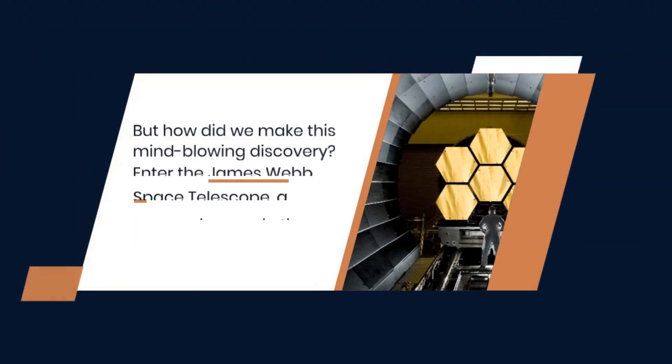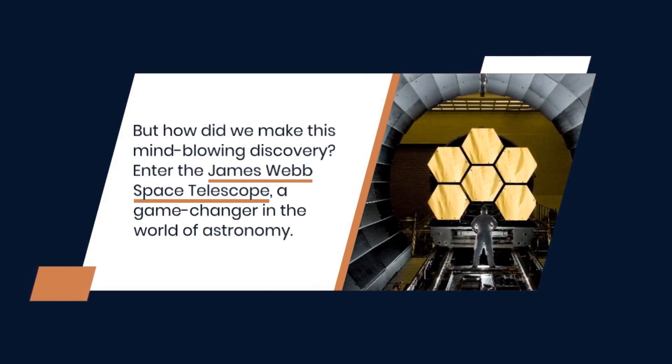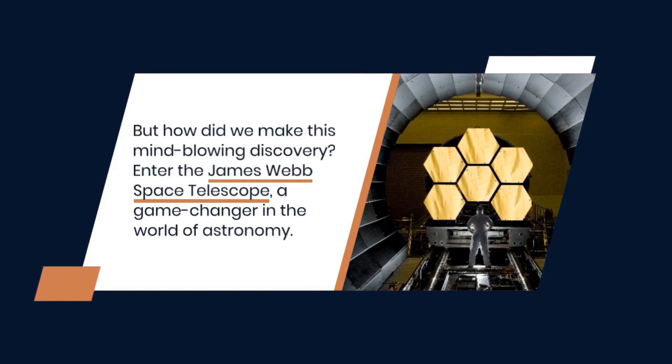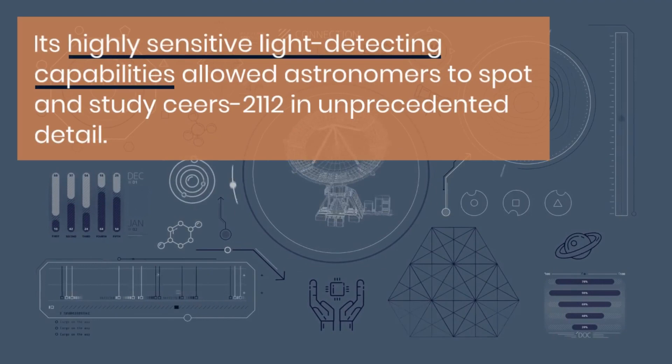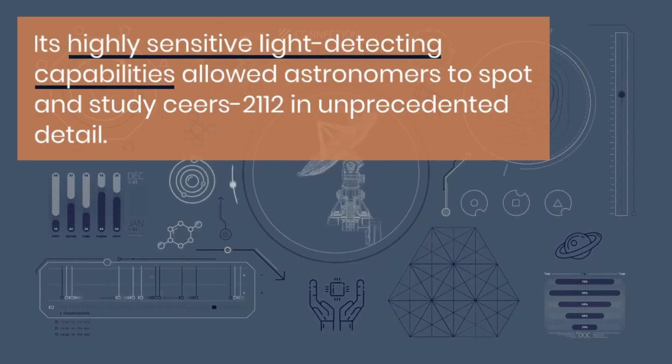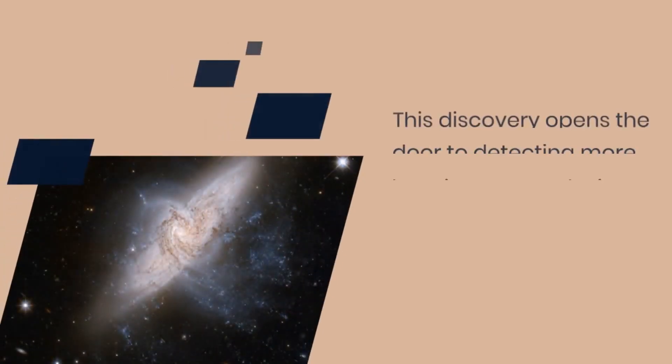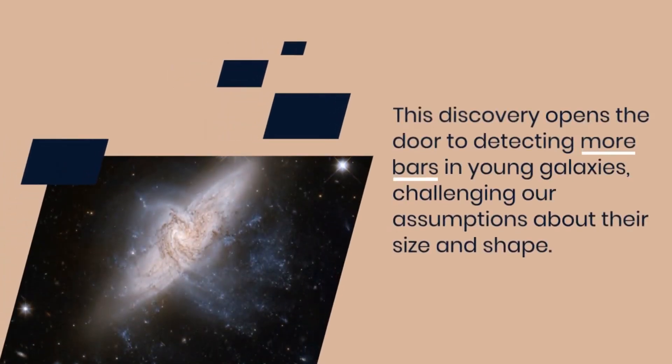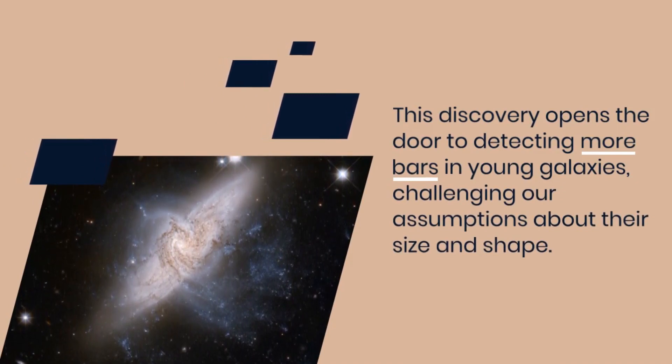But how did we make this mind-blowing discovery? Enter the James Webb Space Telescope, a game-changer in the world of astronomy. Its highly sensitive light-detecting capabilities allowed astronomers to spot and study Ceers-2112 in unprecedented detail. This discovery opens the door to detecting more bars in young galaxies, challenging our assumptions about their size and shape.